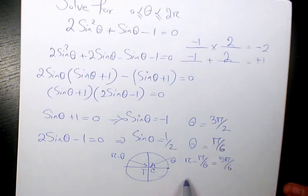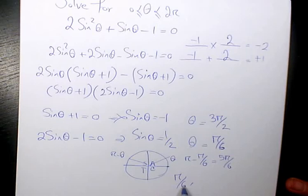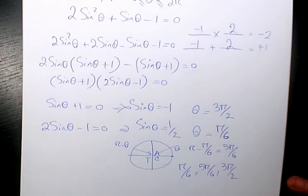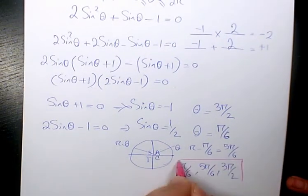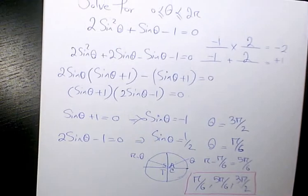So we have these three answers. If you write it in increasing order, we have pi over 6, 5 pi over 6, and 3 pi over 2. These three are the answers to these trigonometric equations.